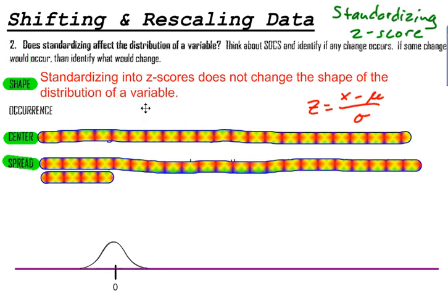When I standardize into z-scores, the shape does not change. Standardizing z-scores does not change the shape of a distribution of a variable. So if my distribution is bell-shaped and symmetric, when I find the z-scores, the standardized distribution is still going to be bell-shaped and symmetric. Now, that's also true with a skewed distribution. If I had something that's skewed left, a distribution that's skewed left, and I find all the z-scores and standardize, then my distribution is still going to be skewed left.